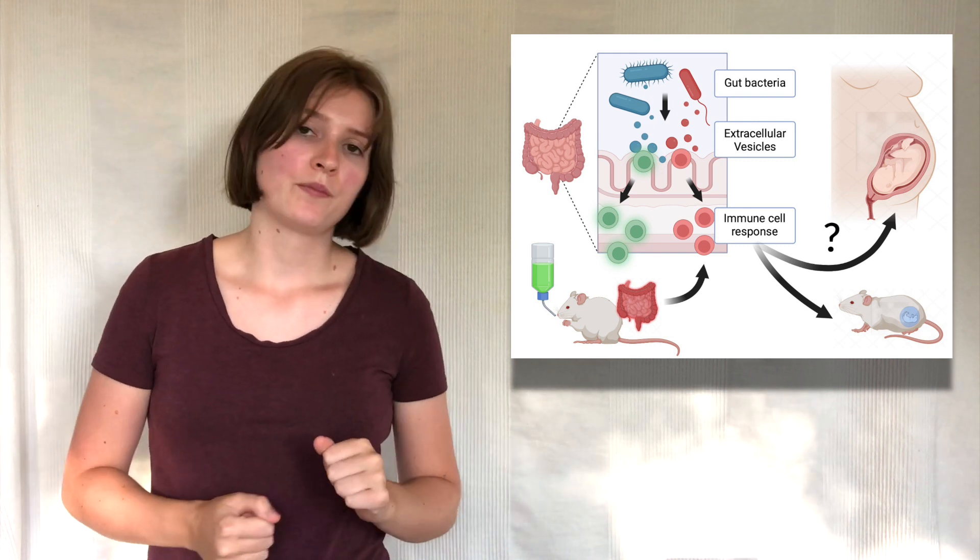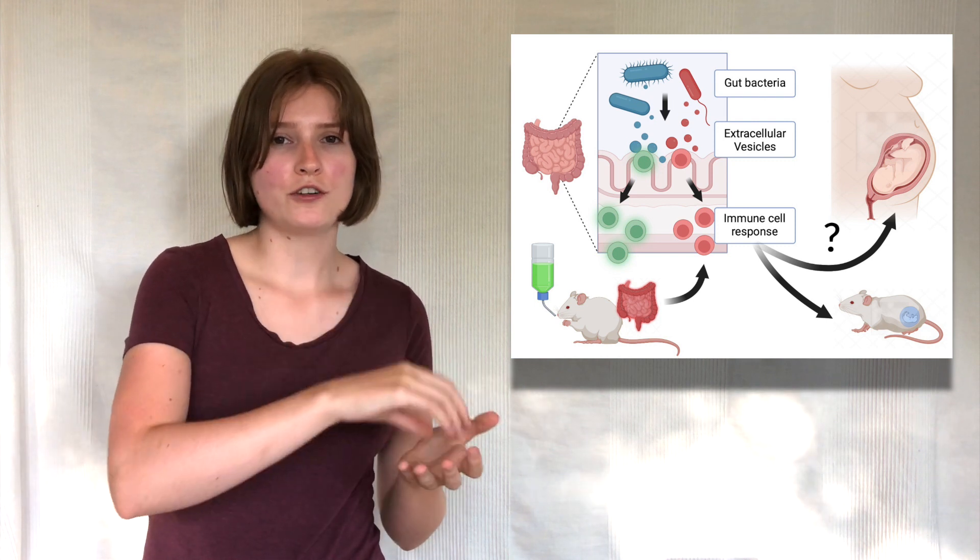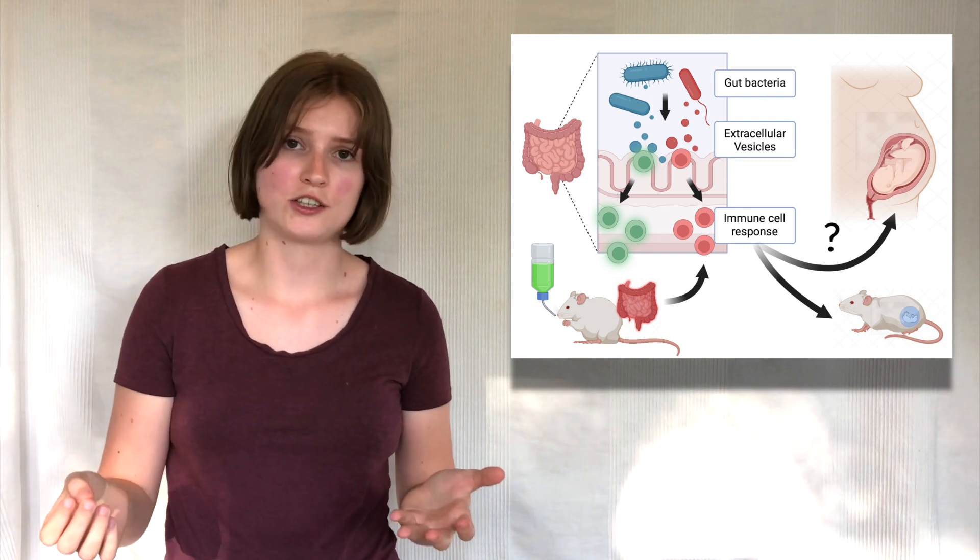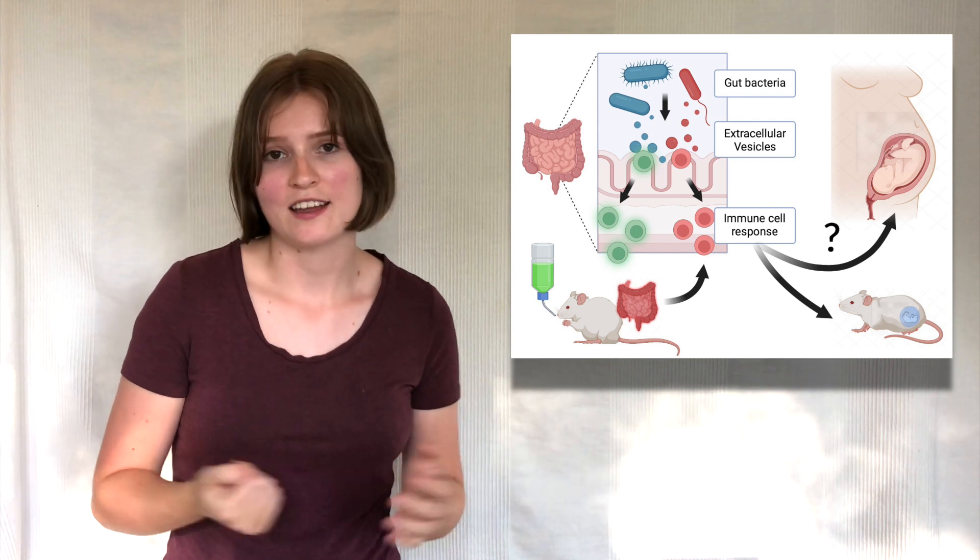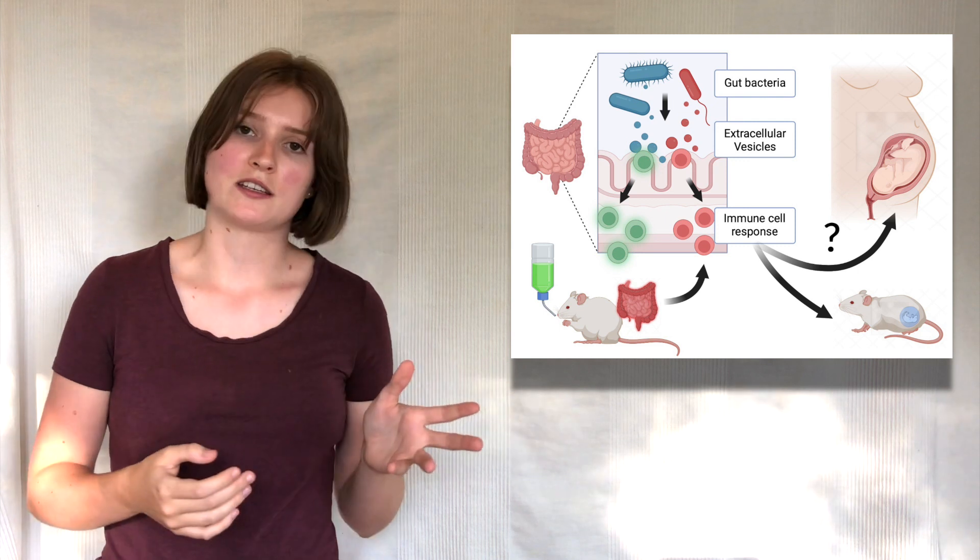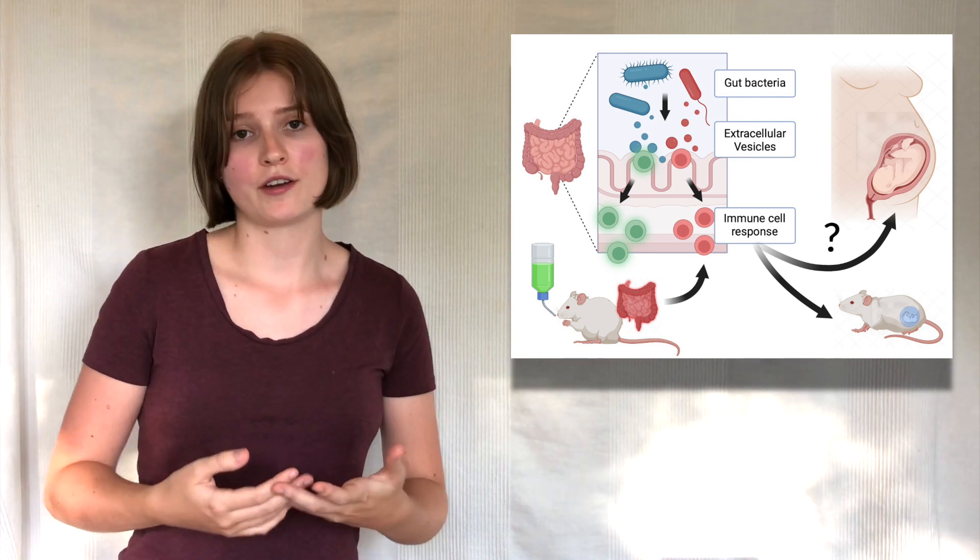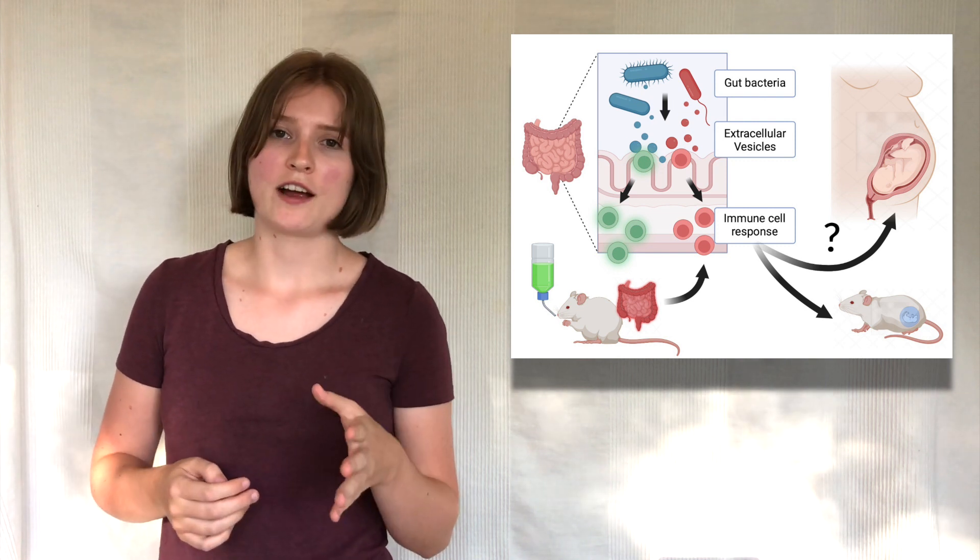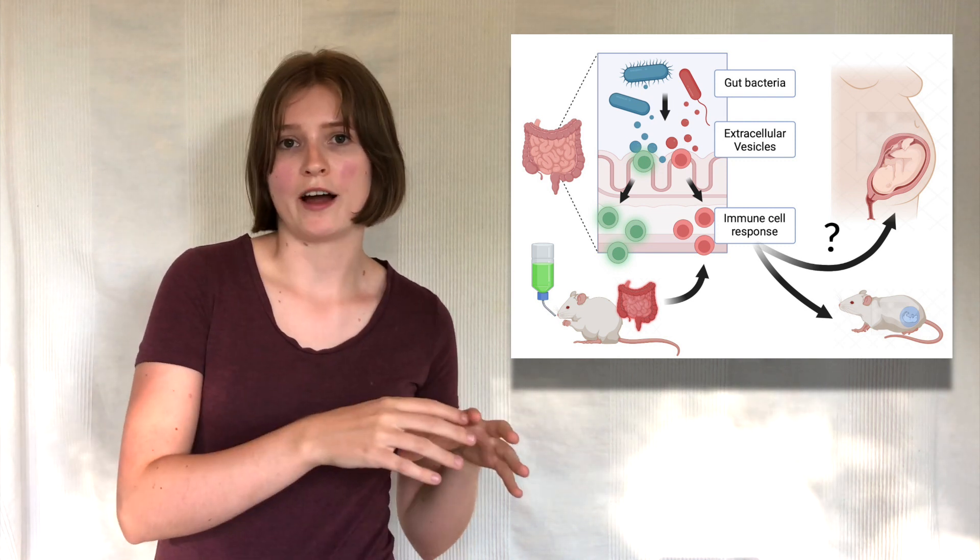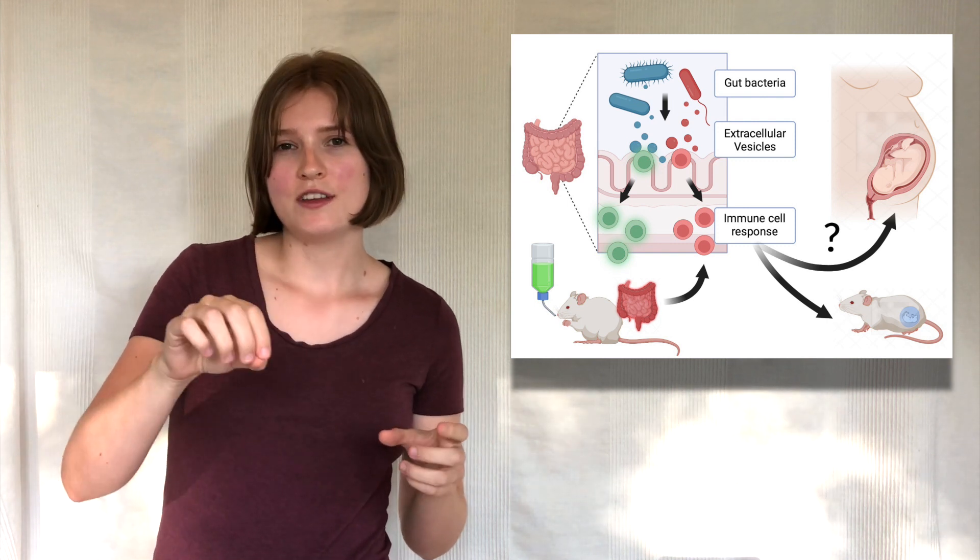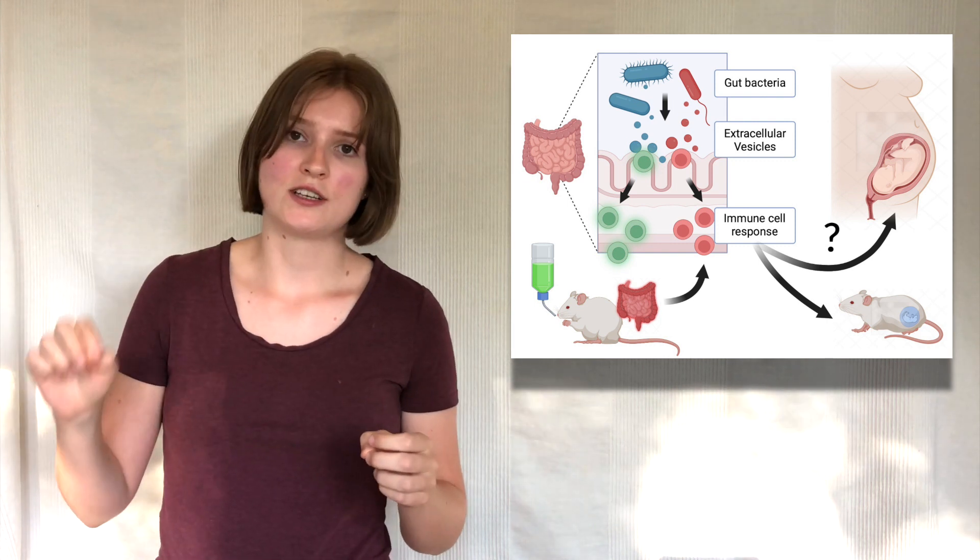But that's only the beginning. I want to know if an altered immune cell response can actually lead to a higher risk for miscarriage, and this is where mice can help. I will observe mice that receive an antibiotic treatment. Antibiotics provoke an imbalance of the gut microbiome. So when these mice get pregnant, I will check whether their disturbed microbiome leads to a different immune cell composition and if this really causes a higher risk for miscarriage.